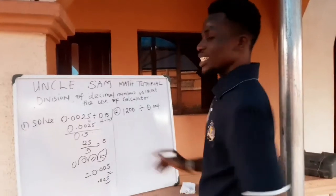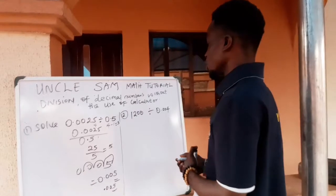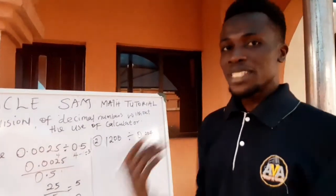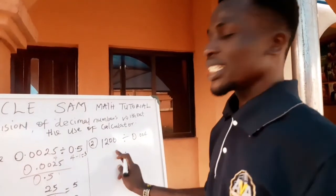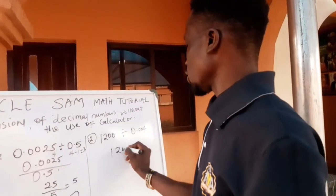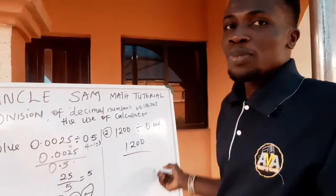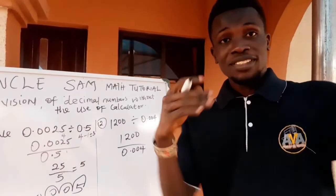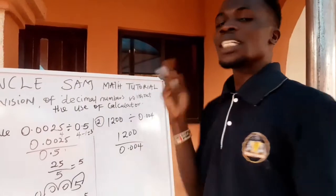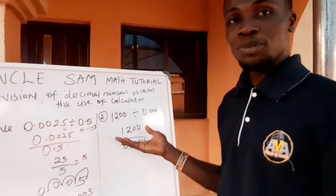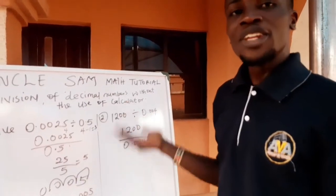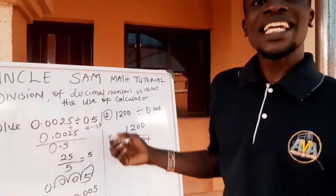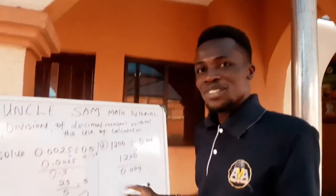Another example: 1,200 divided by 0.0004. We use the same approach — write 1,200 as the numerator and 0.0004 as the denominator. Now, 1,200 is a whole number, so does it have any decimal place? No. The number of decimal places for the numerator can be taken as 0.